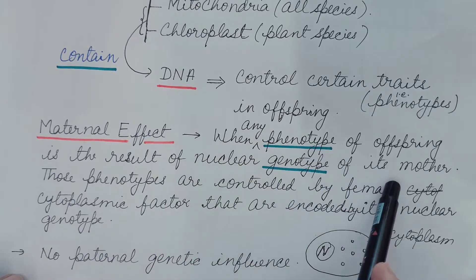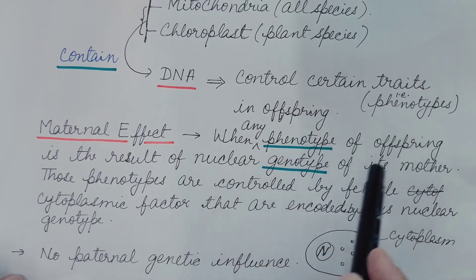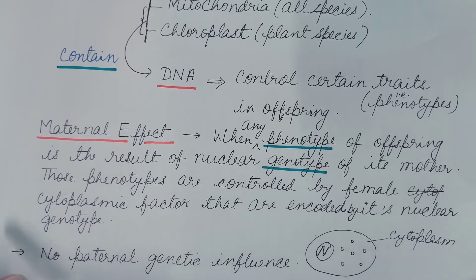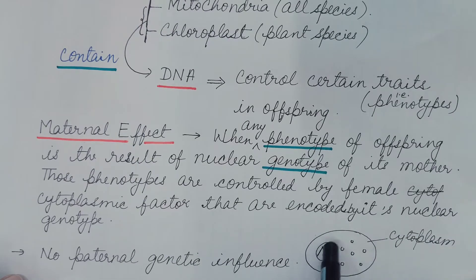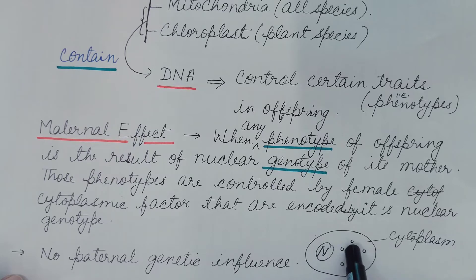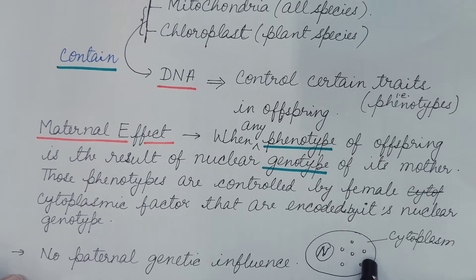When any phenotype of an offspring is the result of the nuclear genotype of its mother — that is, the phenotype of the offspring depends upon the genotype of its mother — this is known as maternal effect. Those phenotypes are controlled by the female cytoplasmic factors that are encoded by the mother's nuclear genotype. The nuclear genes encode for certain cytoplasmic factors or proteins, and the cytoplasm along with these cytoplasmic factors is transferred to the embryo, where they control certain phenotypes or traits of the offspring.